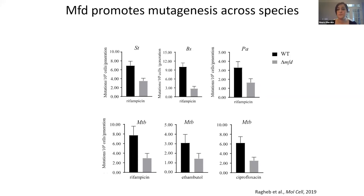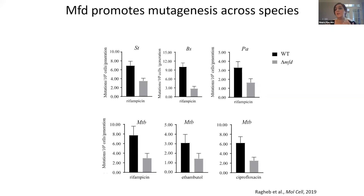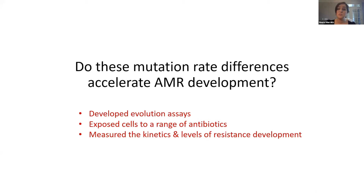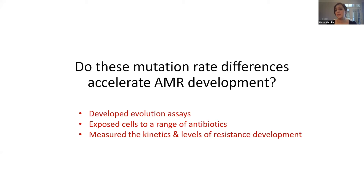The question was: is this relevant for the development of antimicrobial resistance? To address that, we developed an evolution assay where we exposed cells to a range of antibiotics and then measured the kinetics and levels of resistance development. Do these mutation rate differences accelerate AMR development? Here are some of the results.